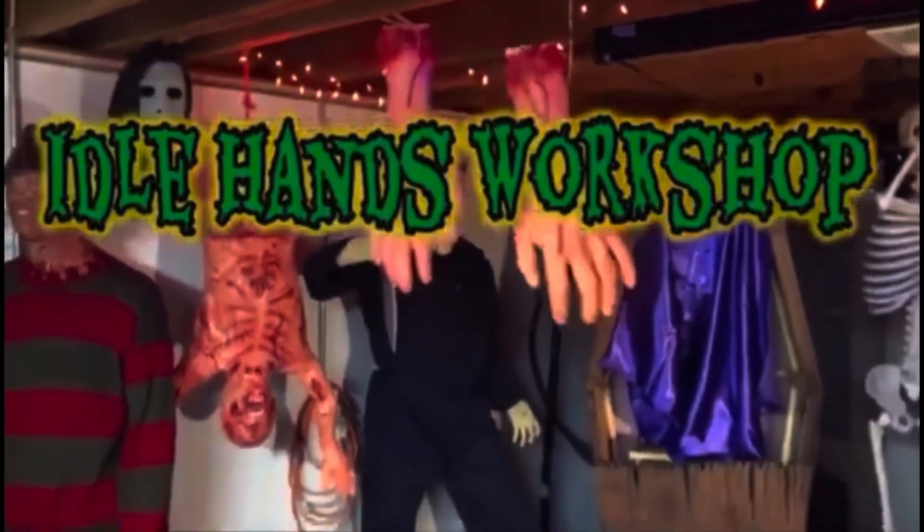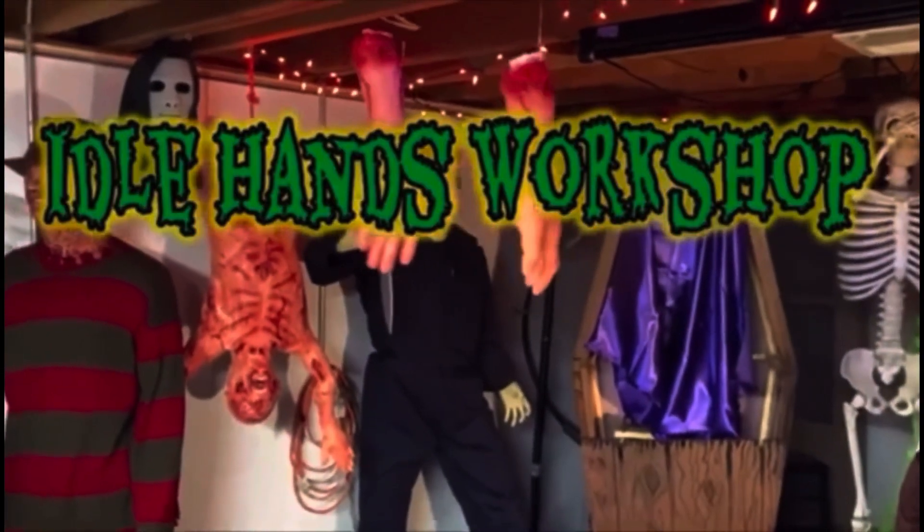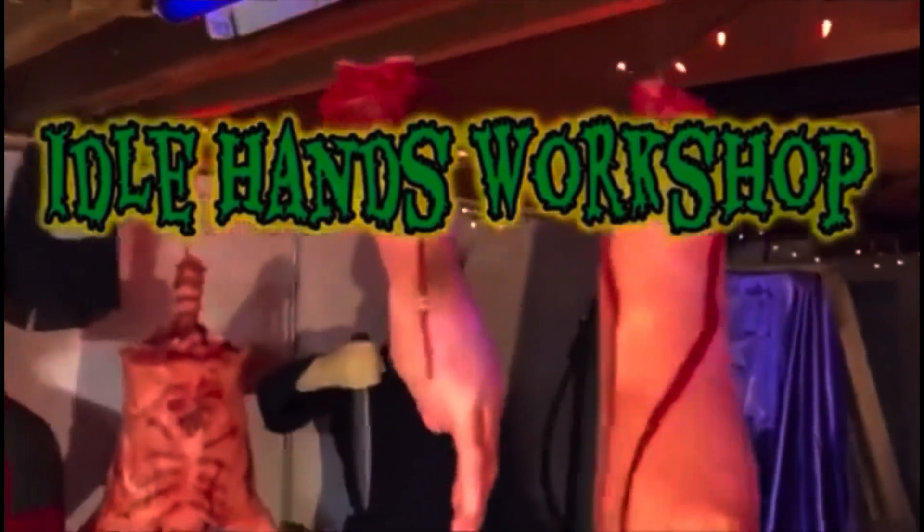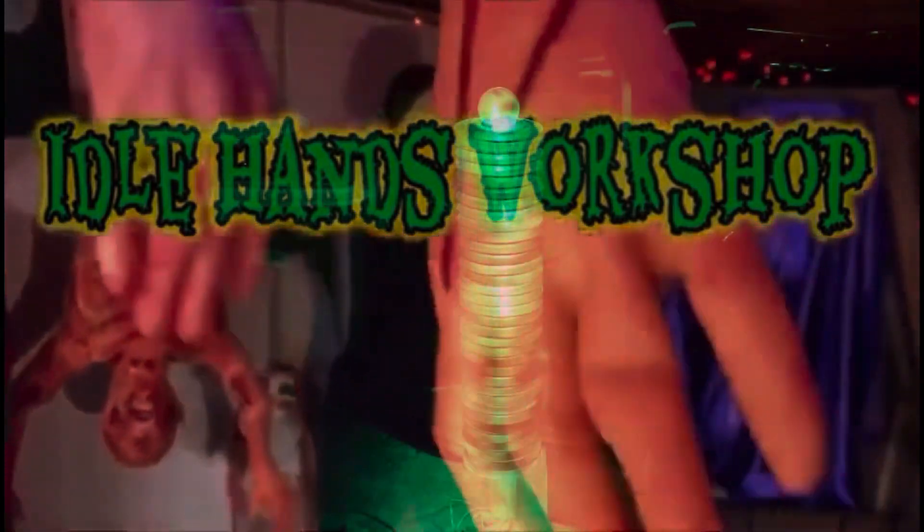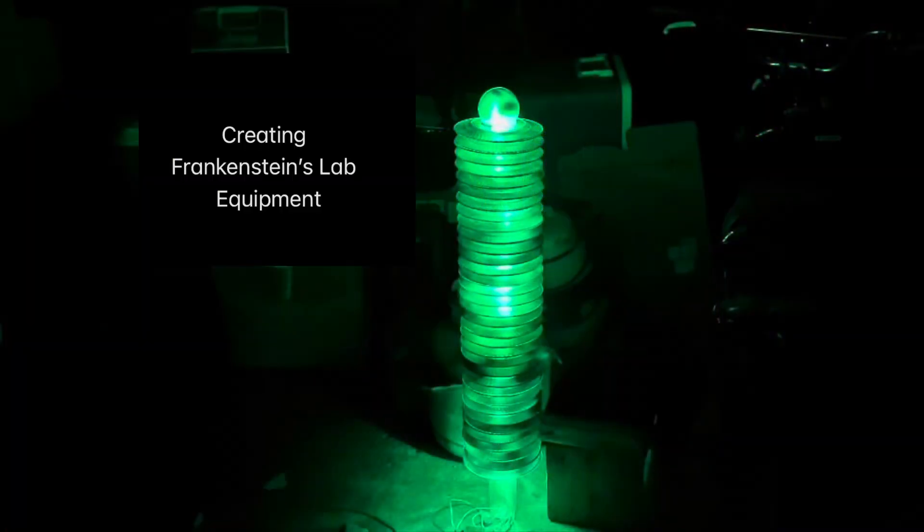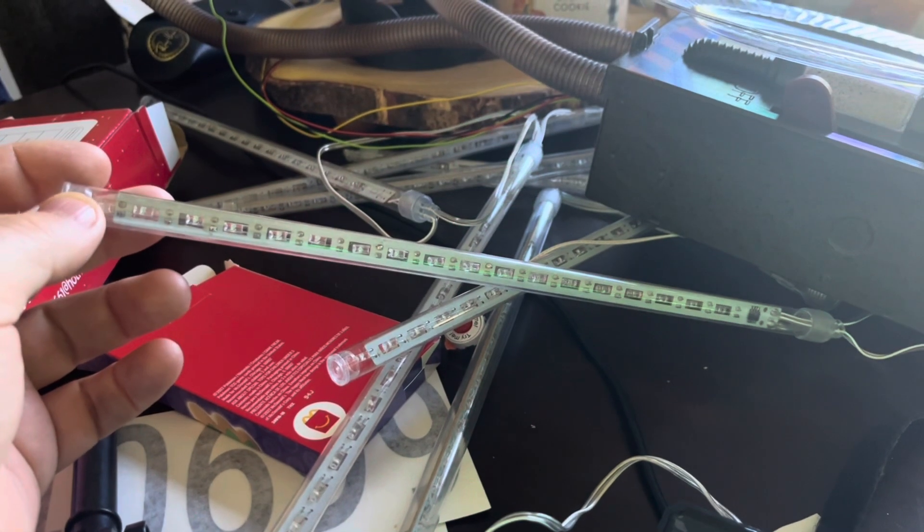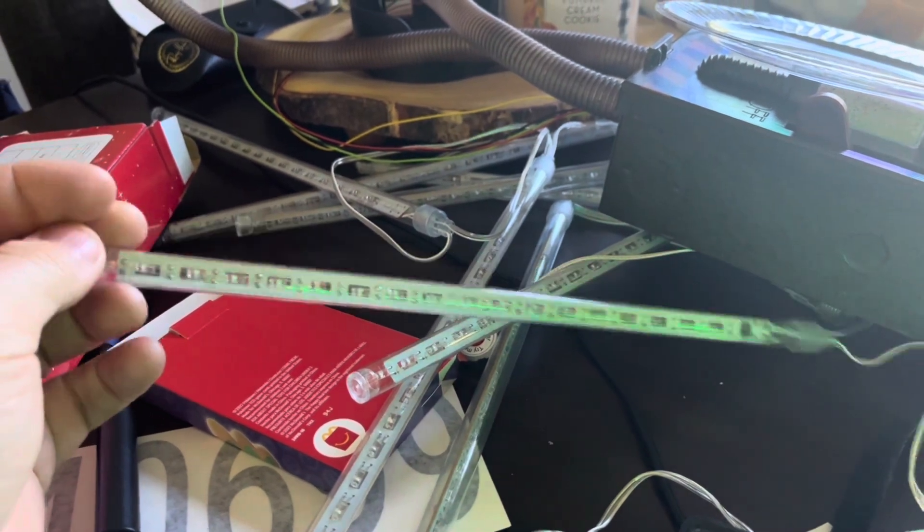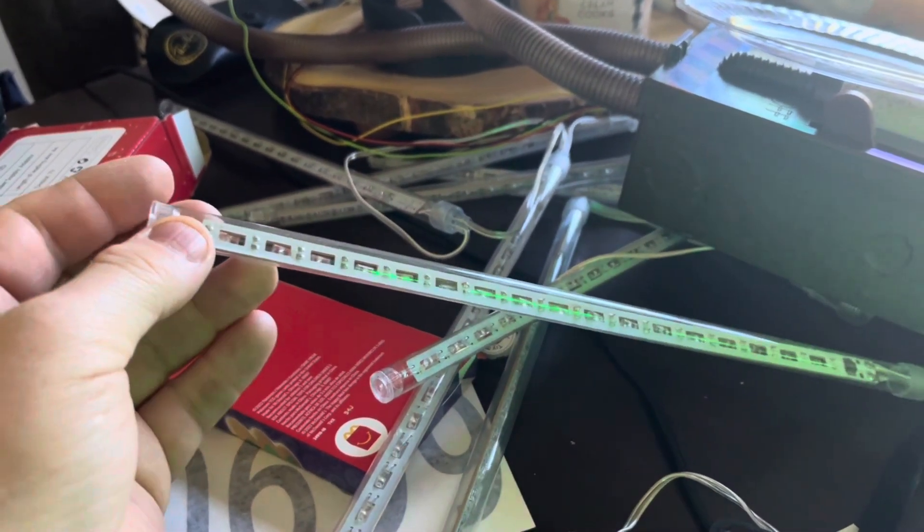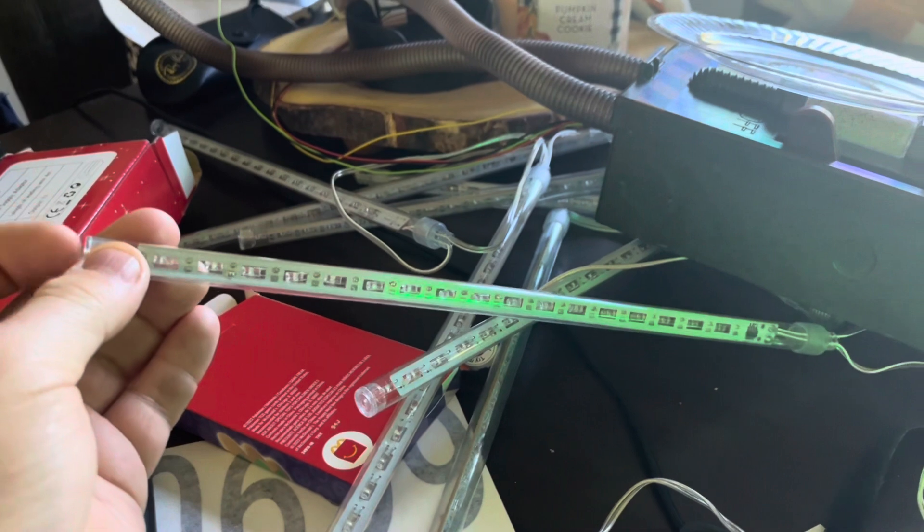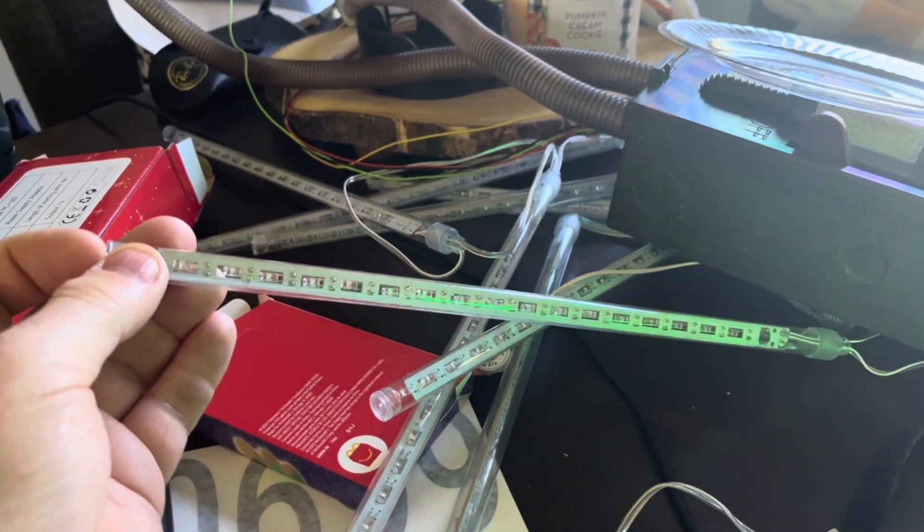Idle Hands are the Devil's Playground. One of the things you want to buy are these meteor rain shower lights. Sometimes they're called dripping icicles and they're about a foot long and there's ten on a string.